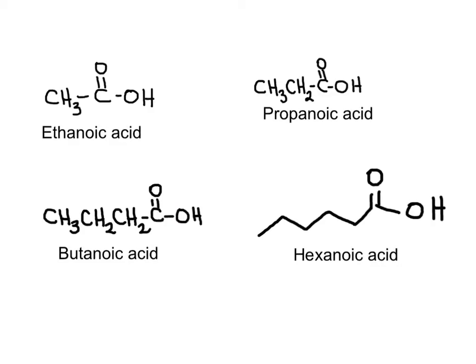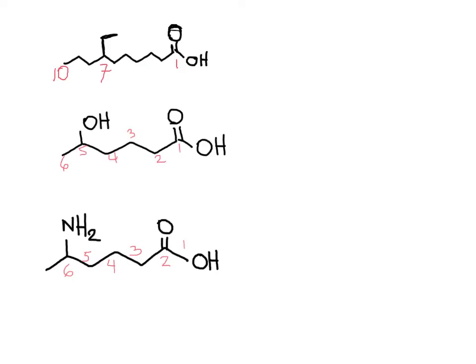If using IUPAC, acetic acid is ethanoic acid. A 3-carbon chain is propanoic acid, then butanoic acid, and hexanoic acid. If the carboxylic acid has alkyl substituents or other functional groups, the chain is numbered beginning with the carboxyl group — it is carbon number 1.